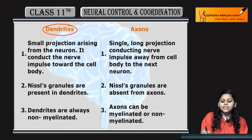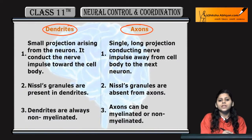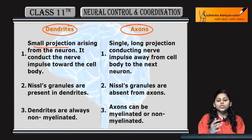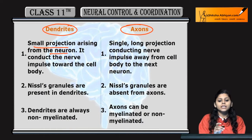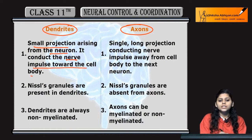Point 7: Coming to dendrites and axons. Dendrites are small projections jo arise hoti hain neurons se, and they conduct the nerve impulse towards the cell body.